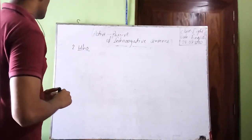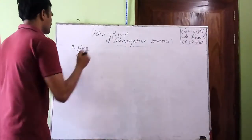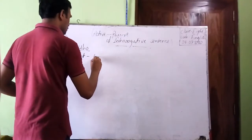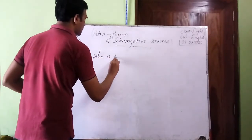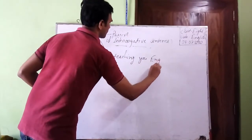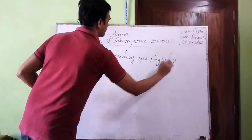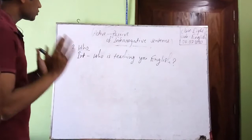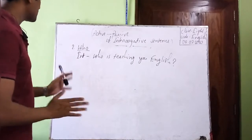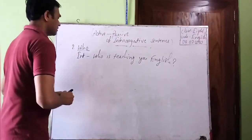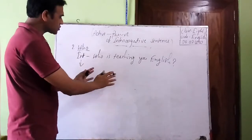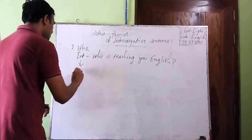In this rule we have to follow some steps. Suppose you have an interrogative sentence starting with the WH-question 'Who,' like: 'Who is teaching you English?' So what we have to do here is turn it directly into passive. We don't need to make it assertive first. If the sentence starts with WH-question 'Who,' then we make it passive directly.